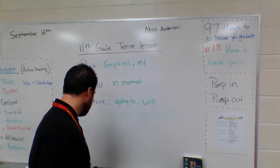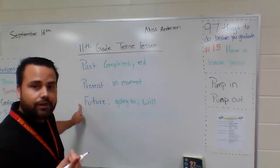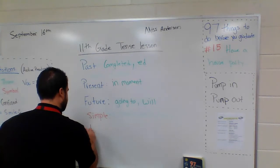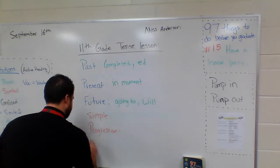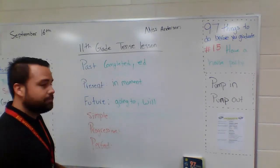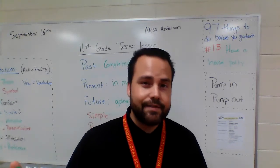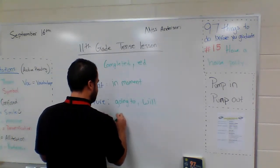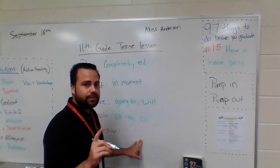Now a couple more words we need to keep in consideration. Tenses can also be — in addition to past, present, and future — simple, progressive, or perfect. Simple means there's really no '-ing' ending and there's also no participle, which is 'has,' 'had,' or 'have.'